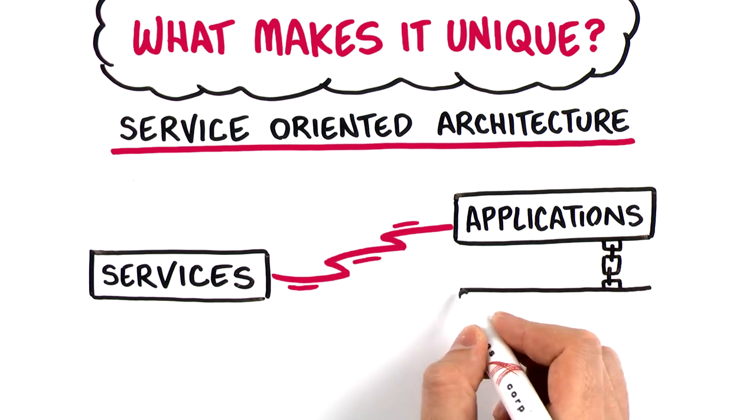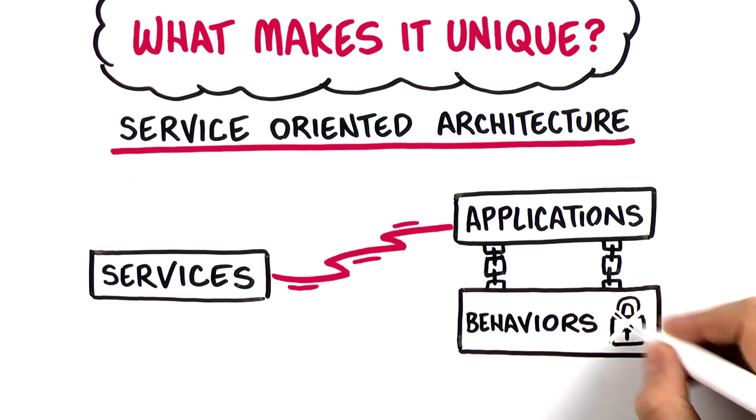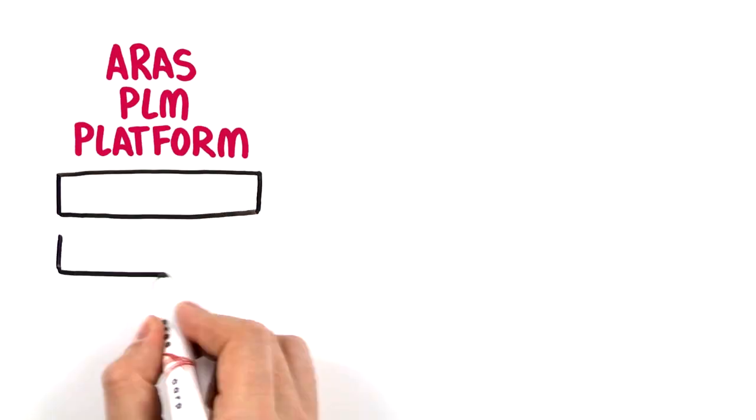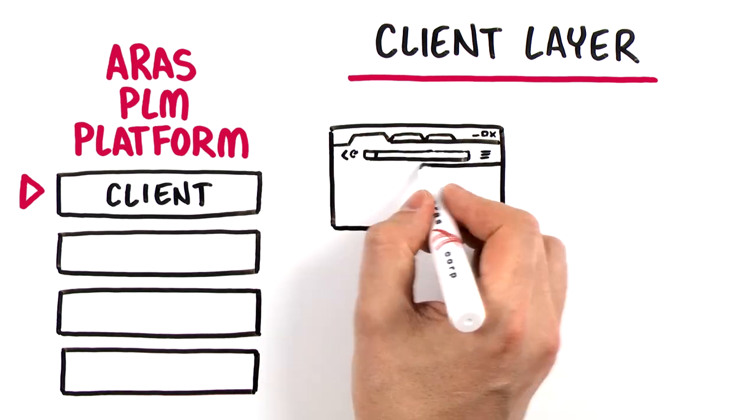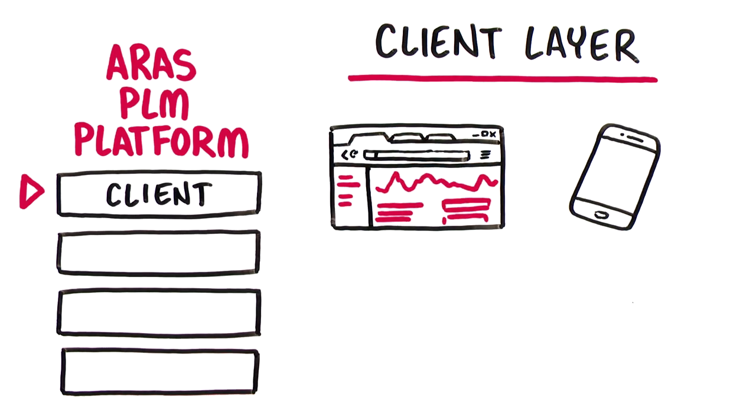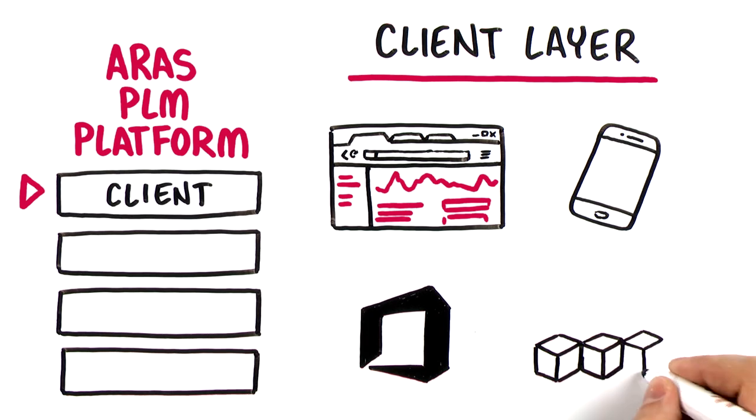The Aras platform is comprised of four layers. The client layer is where users access the platform via a web-based interface, mobile app, Microsoft Office, or other integrated tools like CAD.